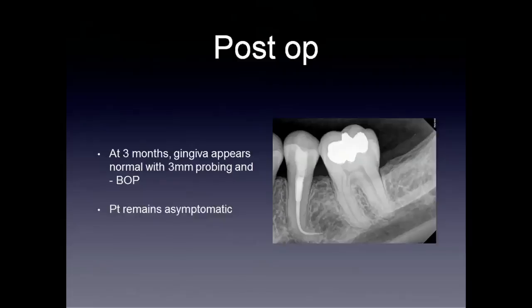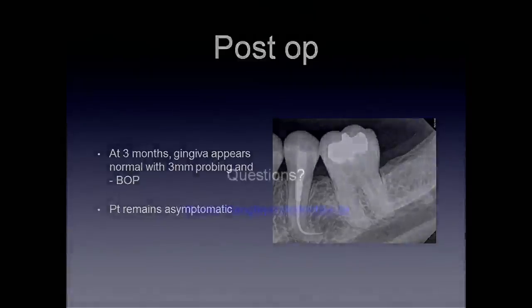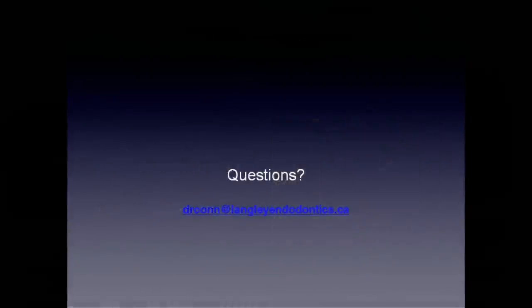Having the patient back at a three-month visit, the tissues all appear normal, which is fantastic. It appears that we've maintained the biologic width. The patient is symptom-free, and there's no probing in the area as well. So this is definitely a very successful case managed well. If you have any questions about this case or any other, please don't hesitate to contact me. Thank you for watching.